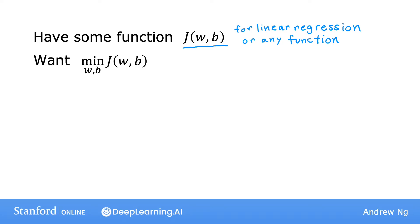Just to make this discussion on gradient descent more general, it turns out that gradient descent applies to more general functions, including other cost functions that work with models that have more than two parameters. For instance, if you have a cost function J as a function of w1, w2, up to wn and b, your objective is to minimize J over the parameters w1 to wn and b. Gradient descent is an algorithm that you can apply to try to minimize this cost function J as well.